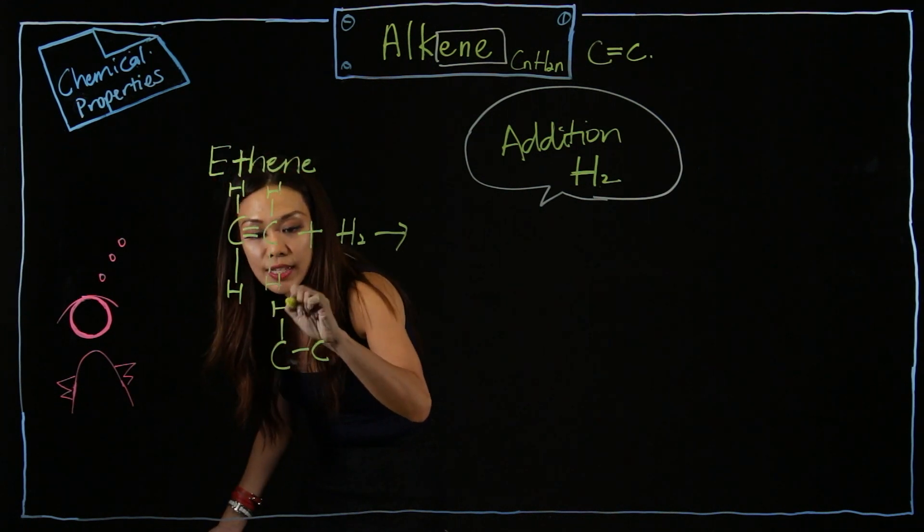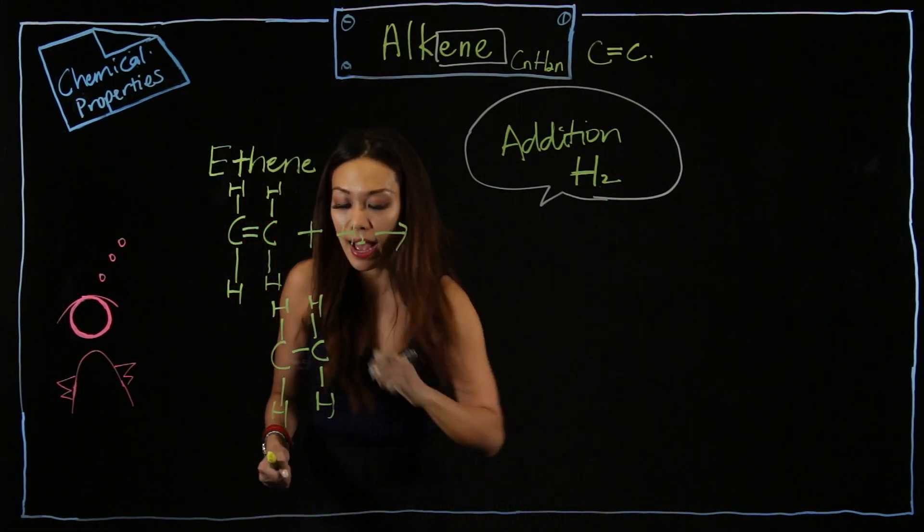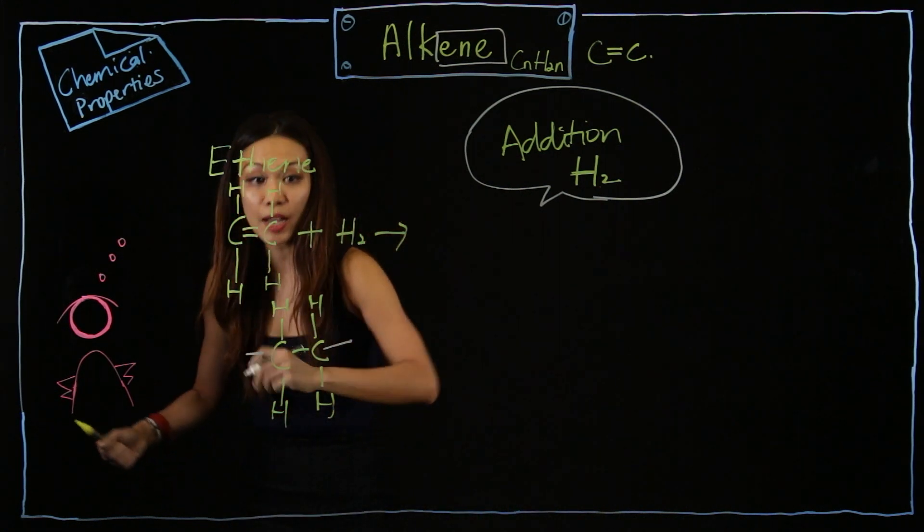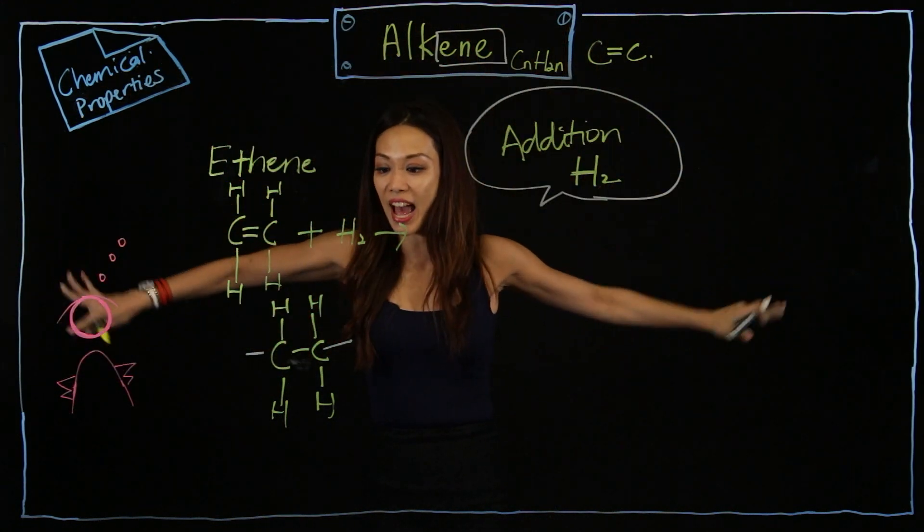And on top is still the same, bottom is still the same. But I will extend out to become a single bond. So double bond becomes single bond - you do this action. Okay, can you see? Two hands out.